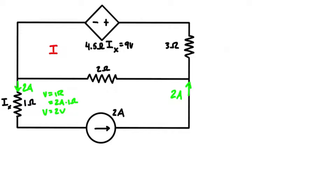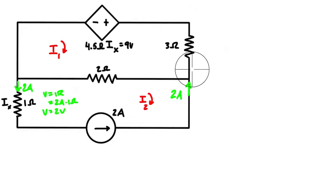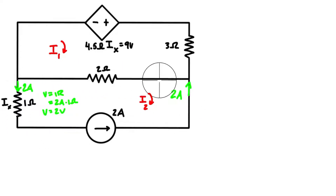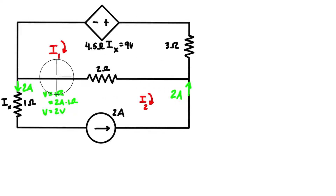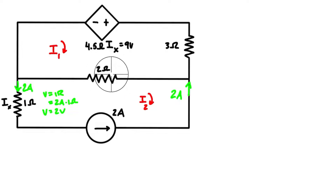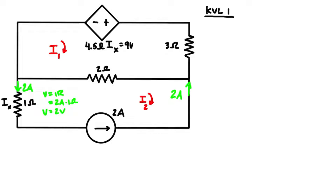In mesh analysis, we identify the current flowing through each loop. We call the top loop current i1 going clockwise, and the bottom loop current i2 also going clockwise. The actual current through the shared element is the sum: i1 going one way and i2 going the other. Then we apply KVL around each loop.